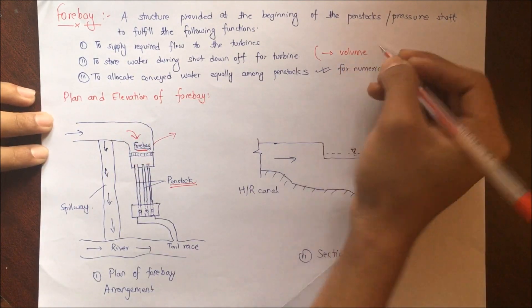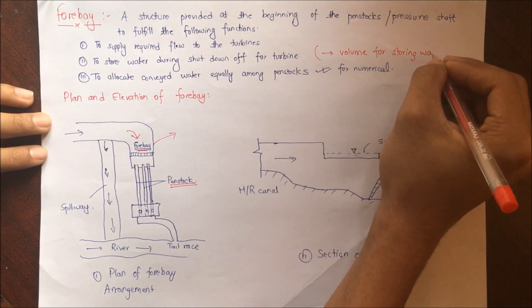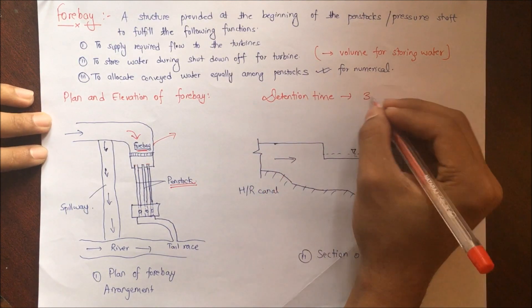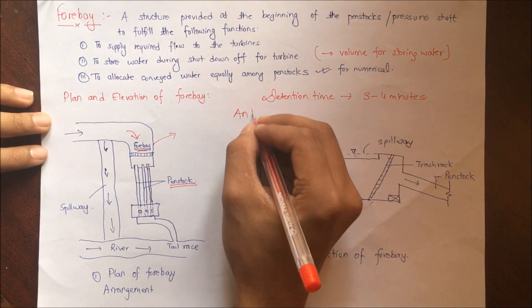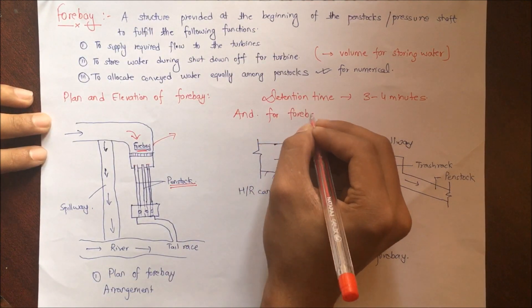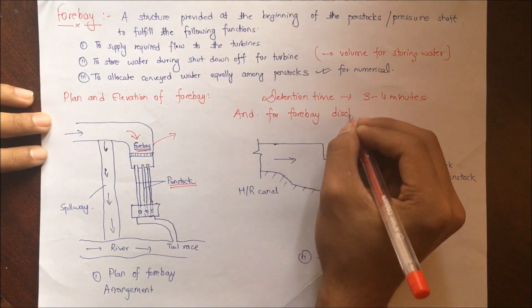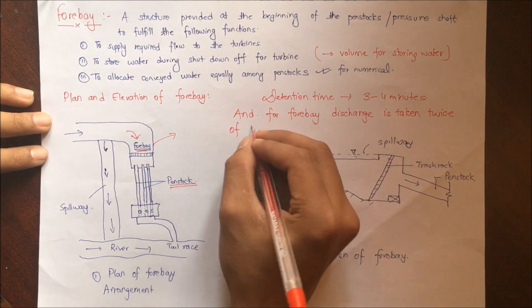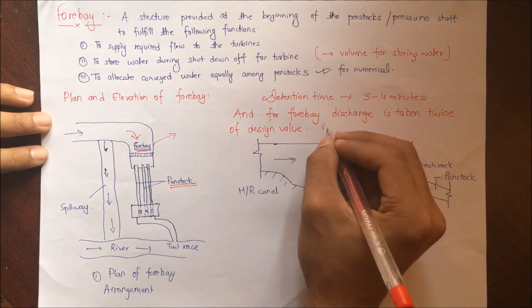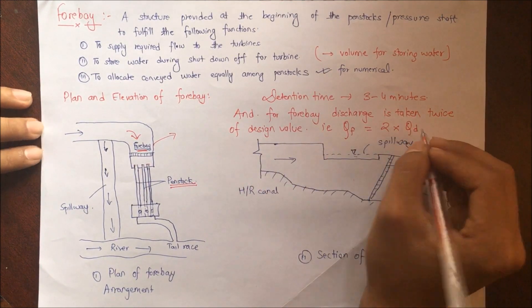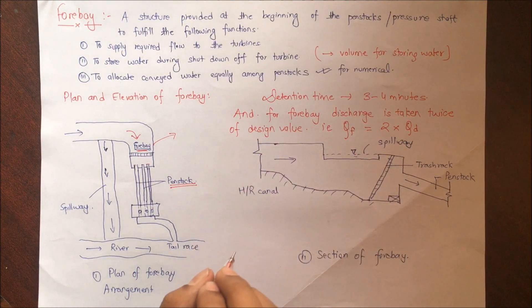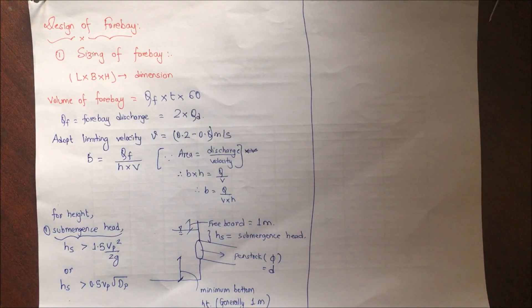Now we are interested in the design of forbay, so we have to consider the volume for storing water. Before that we have to consider the detention time. As I said, during the shutdown of turbine, water has to be stored in forbay. Volume for storing water and the detention time is the time for which the turbine will be shut down. For forbay, discharge is taken twice the design value. Water has to be stored, so the design discharge or the discharge for forbay is taken as twice of design discharge.